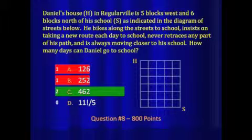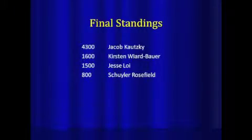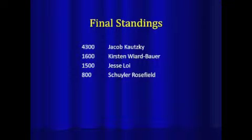Who got that? Jacob and Kirsten. Kirsten, was that your lucky number or how did you get that? I guessed. That's a good guess. Jacob is in first place. Kirsten now in second place with 1,600. Jesse right behind with 1,500, and Shuler with 800. Jacob, you'll be in the square-off round against the winner of Game 2. You've already won 500. Thank you.